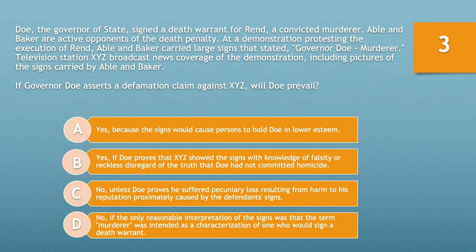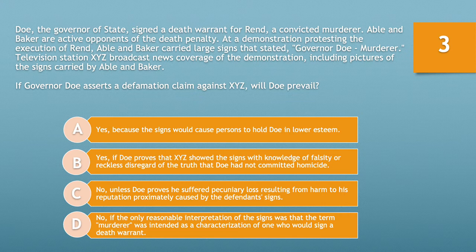A, yes, because the signs would cause persons to hold Doe in lower esteem. B, yes, if Doe proves that XYZ showed the signs with knowledge of falsity or reckless disregard of the truth that Doe had not committed homicide. C, no, unless Doe proves he suffered pecuniary loss from harm to his reputation caused by the defendant's signs. Or D, no, if the only reasonable interpretation of the signs was that the term 'murderer' was intended as a characterization of one who would sign a death warrant. Take ten seconds.